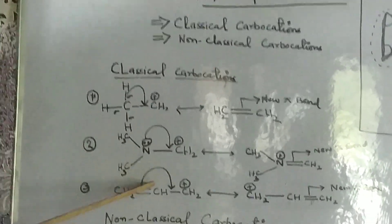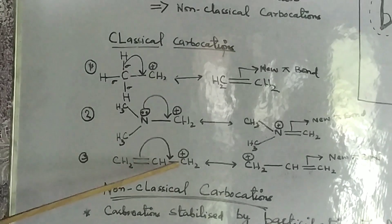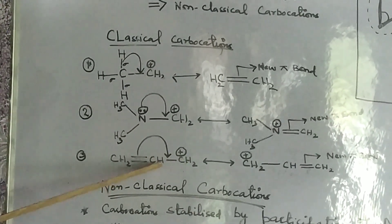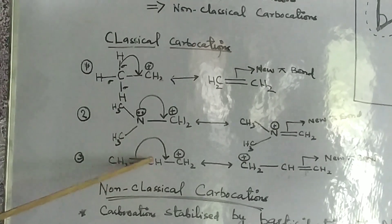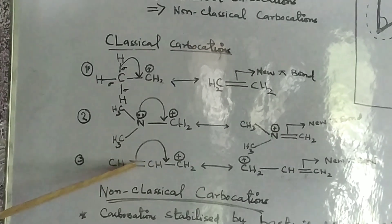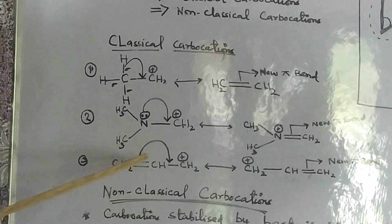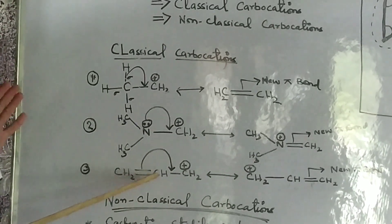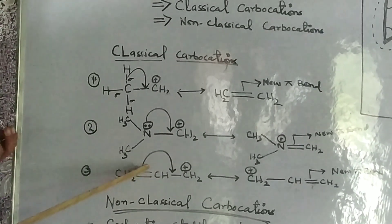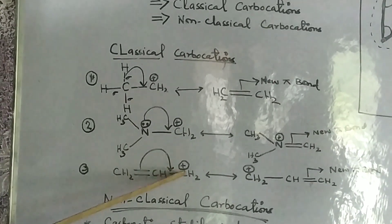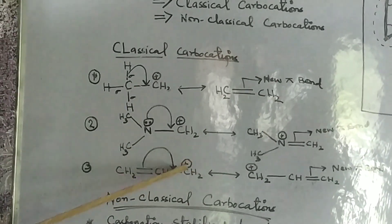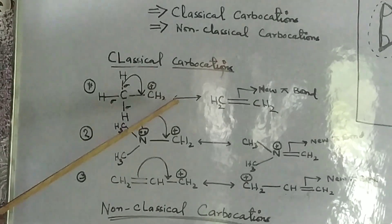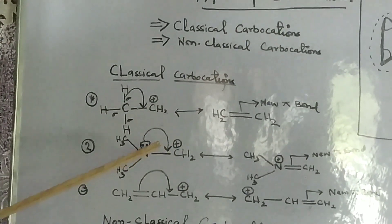The third way to stabilize those carbocations is from a carbon bearing positive charge adjacent to a carbon-carbon double bond or carbon-carbon triple bond. In that condition, the pi electrons from the carbon-carbon double bond or triple bond will come and stabilize it. So these are the three ways by which classical carbocations can be stabilized.